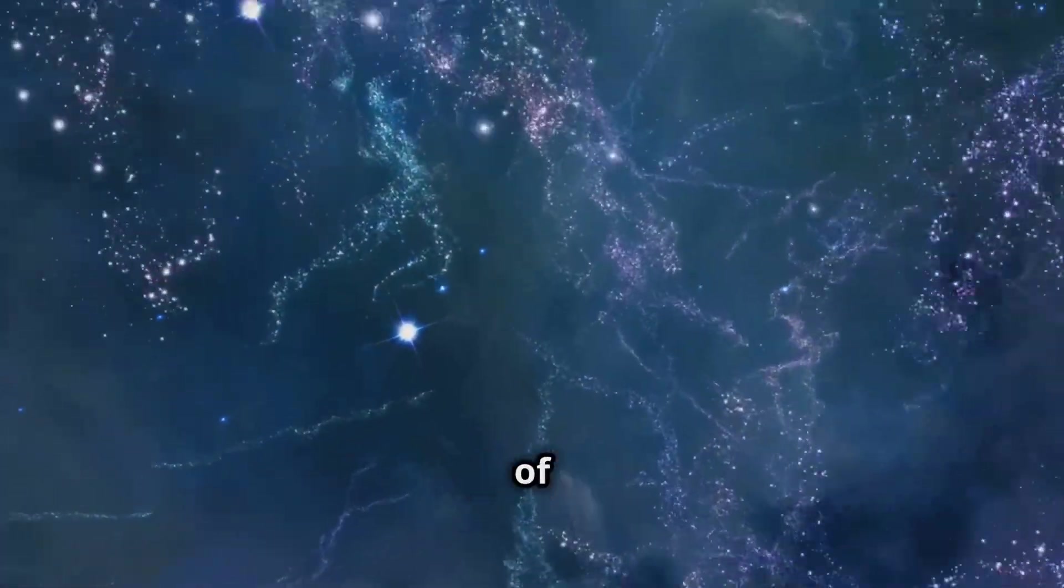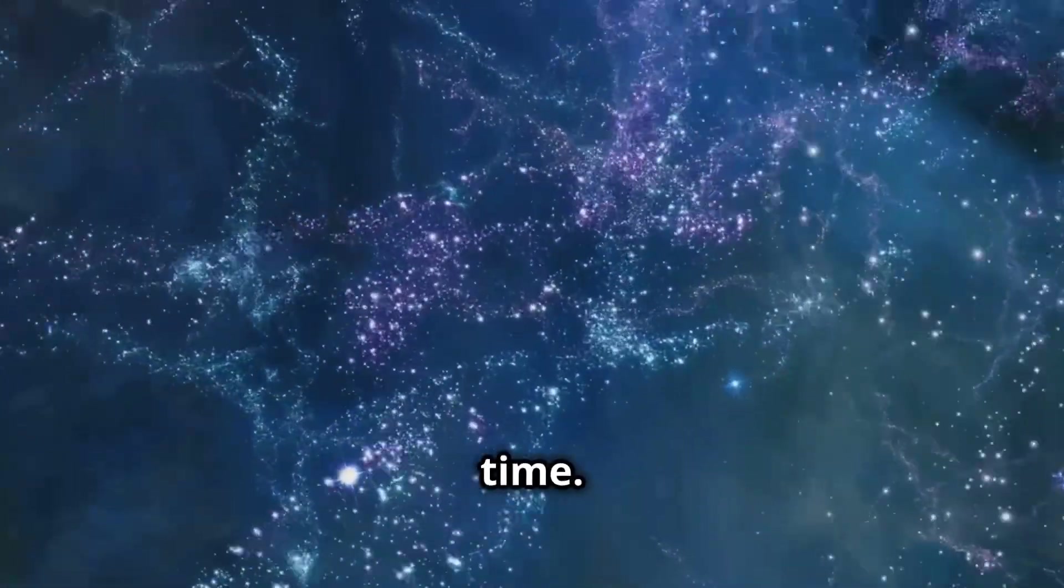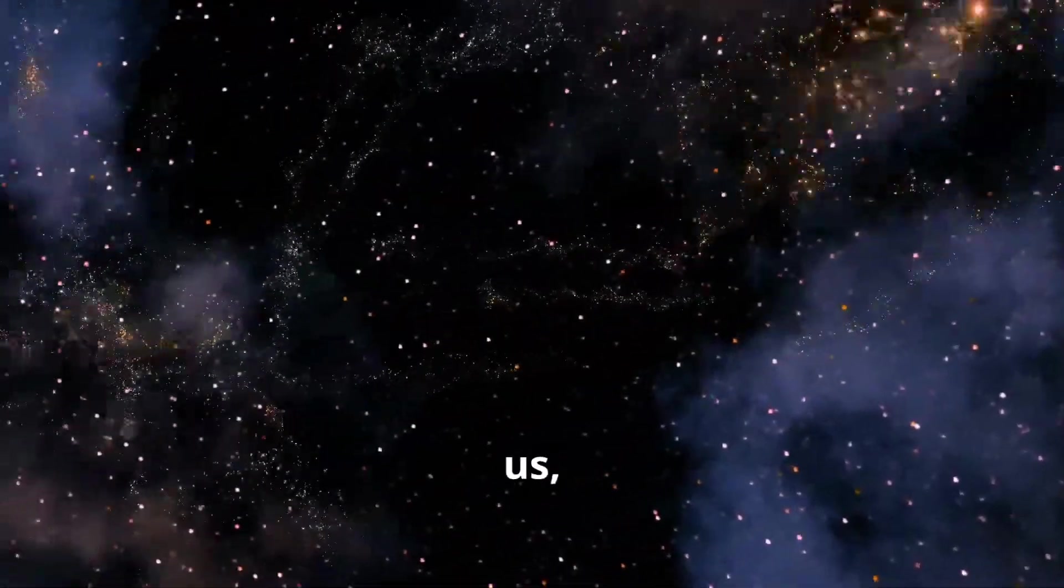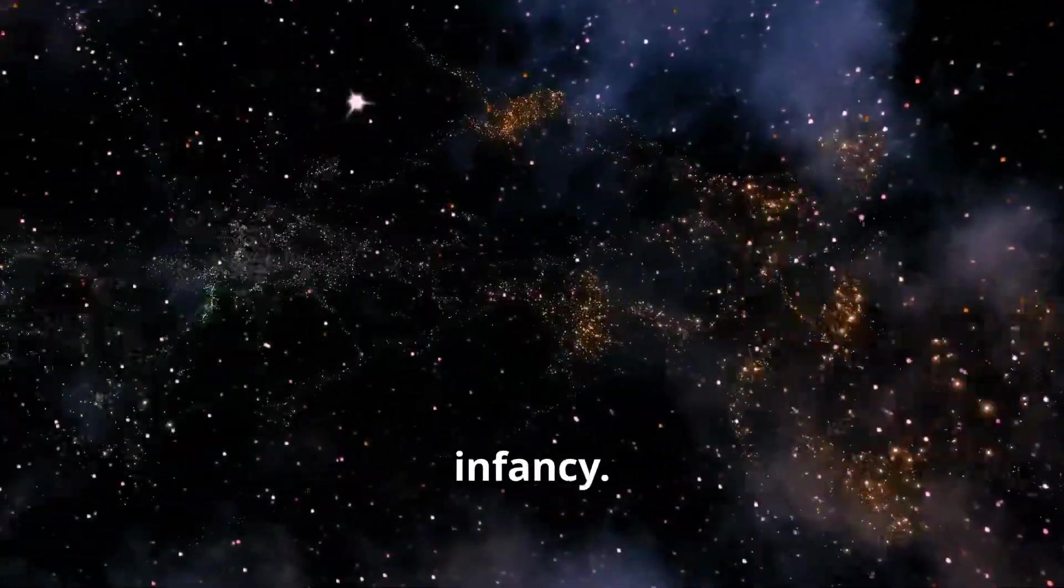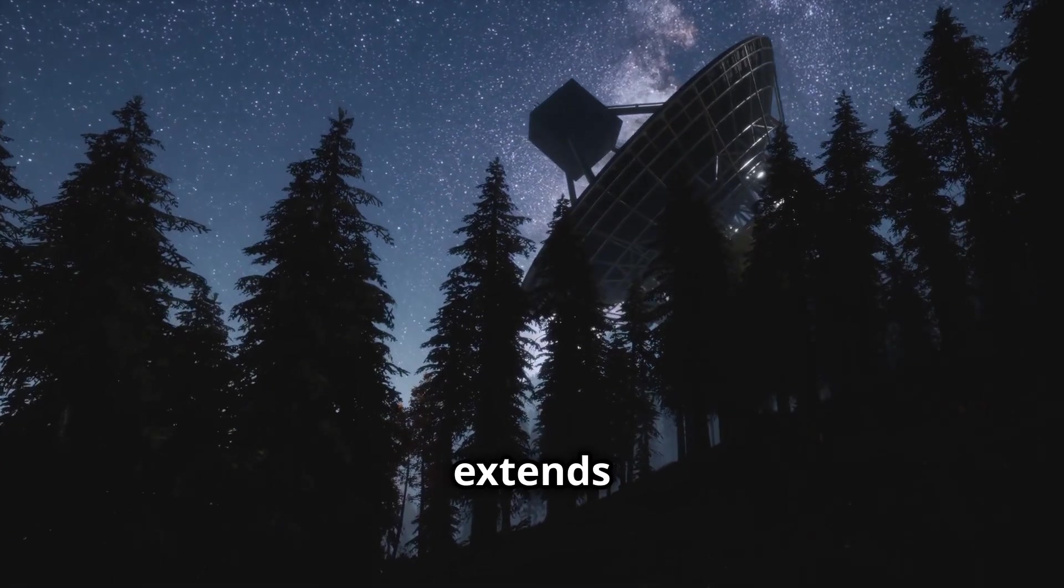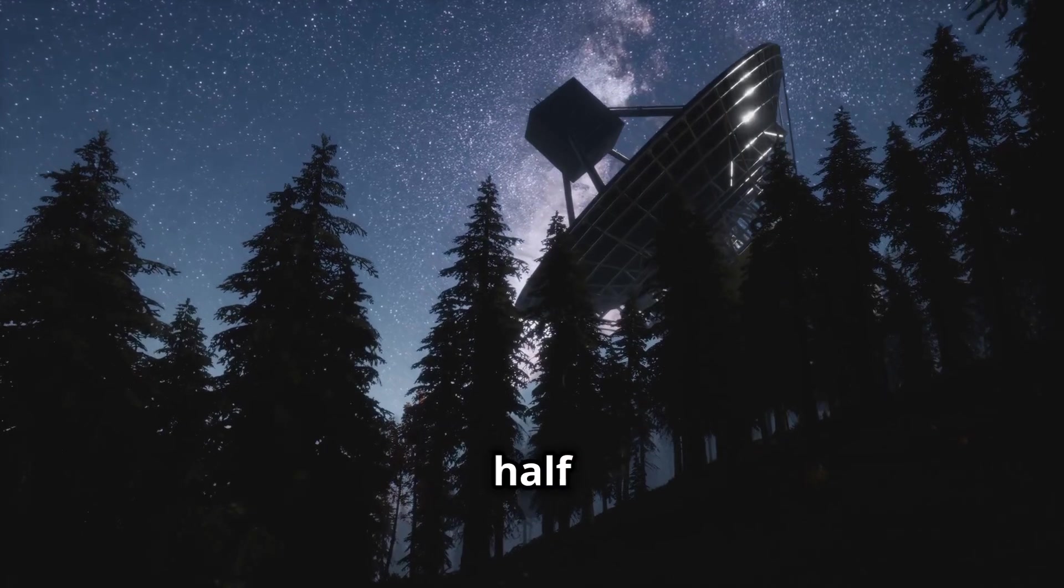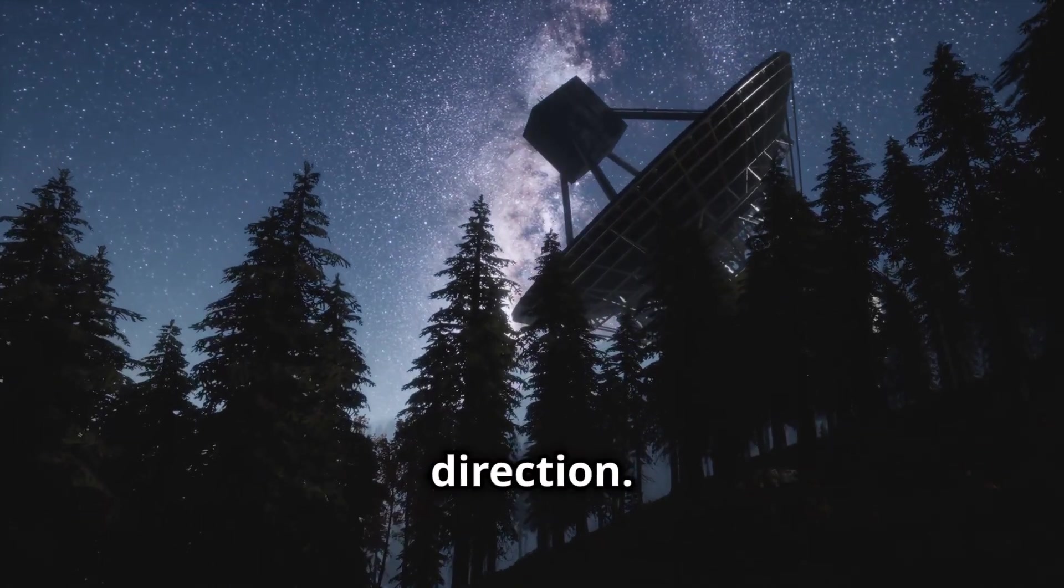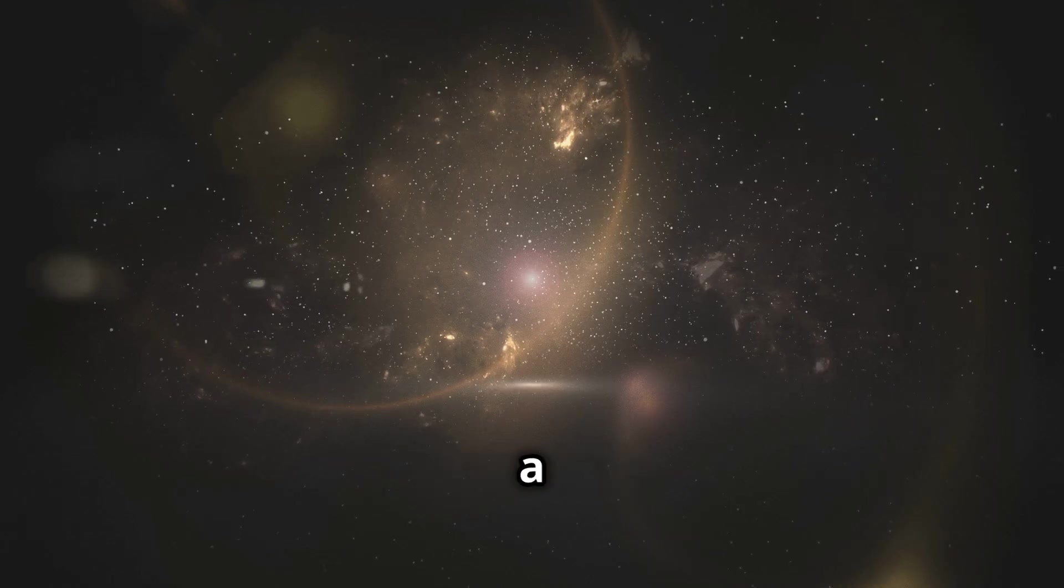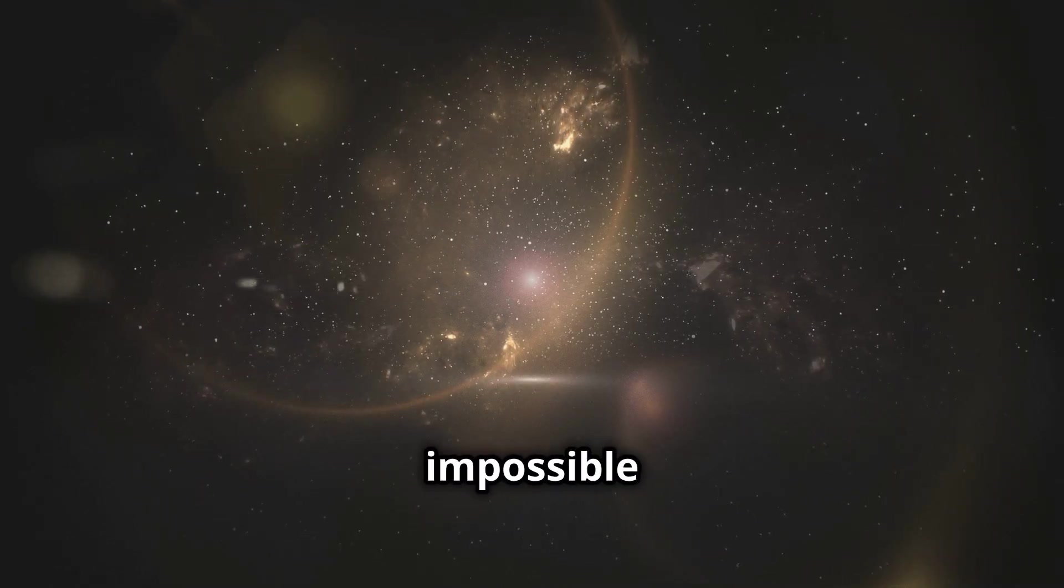When we look out into the depths of space, we're actually looking back in time. The light from those distant galaxies has taken billions of years to reach us, giving us a glimpse of the universe as it was in its infancy. The observable universe, the part we can see from Earth, extends about 46 and a half billion light years in every direction. That's a diameter of 93 billion light years, a number so large it's almost impossible to comprehend.